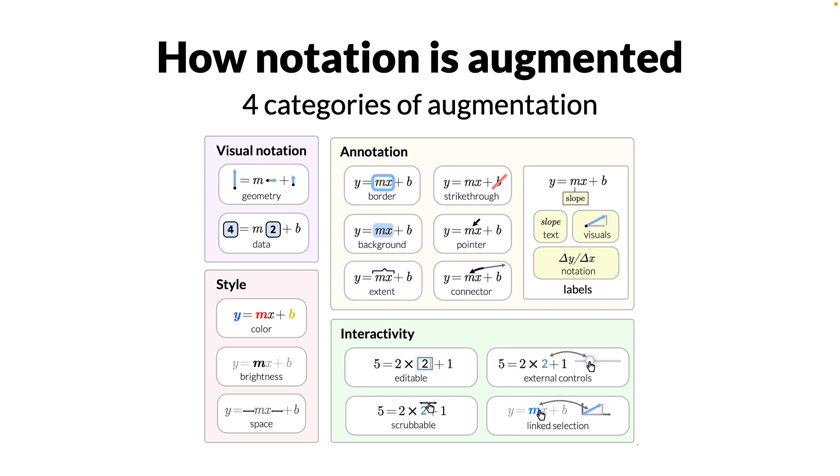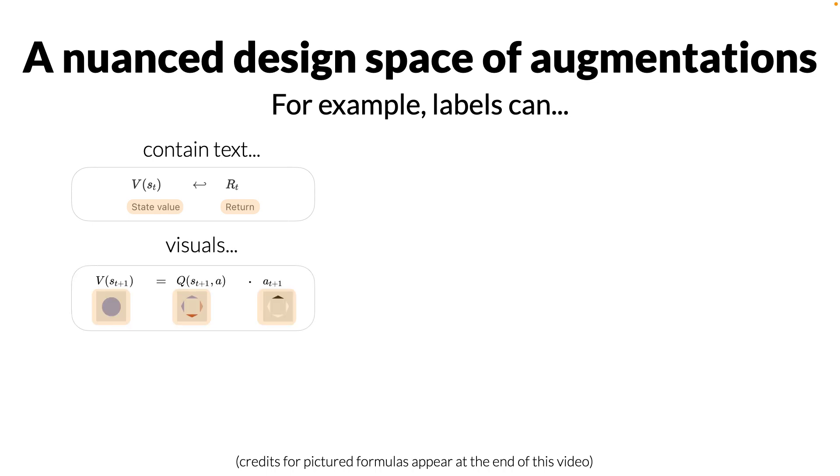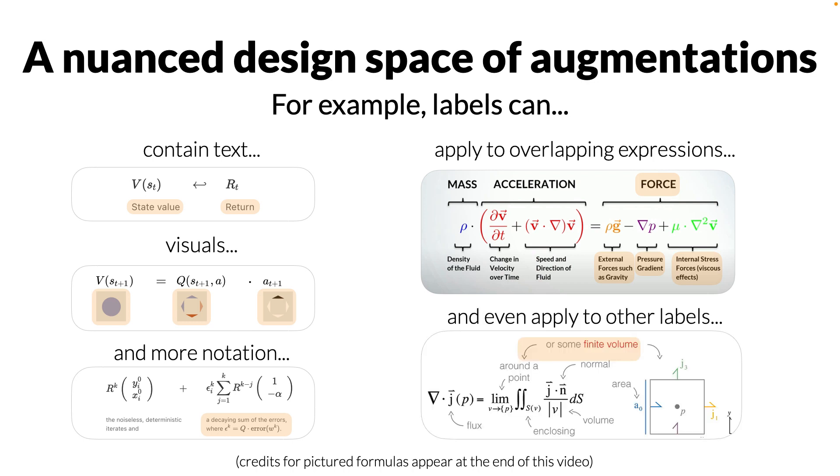The design space of some of the augmentations could be rather complex. For instance, consider labels. In the documents we analyzed, labels could contain text, visuals, and additional notation. Furthermore, sometimes labels applied to overlapping expressions, explaining the same notation at multiple levels of detail. Or they applied to other labels, rather than just mathematical expressions. Nuanced design alternatives like these were present for many of the kinds of augmentations, and we describe them at length in our paper.